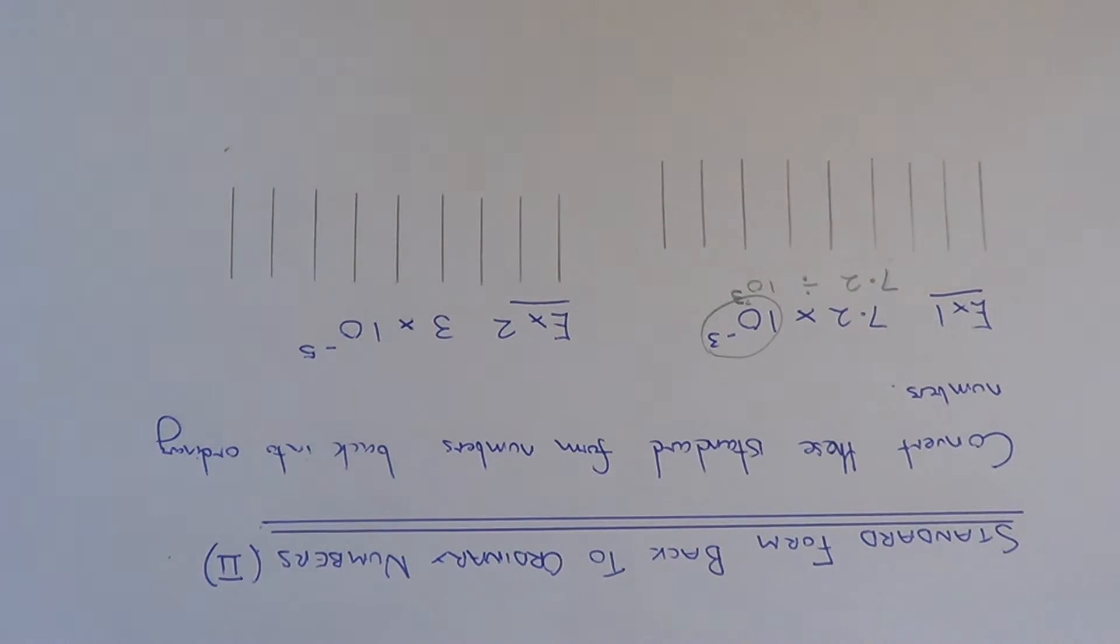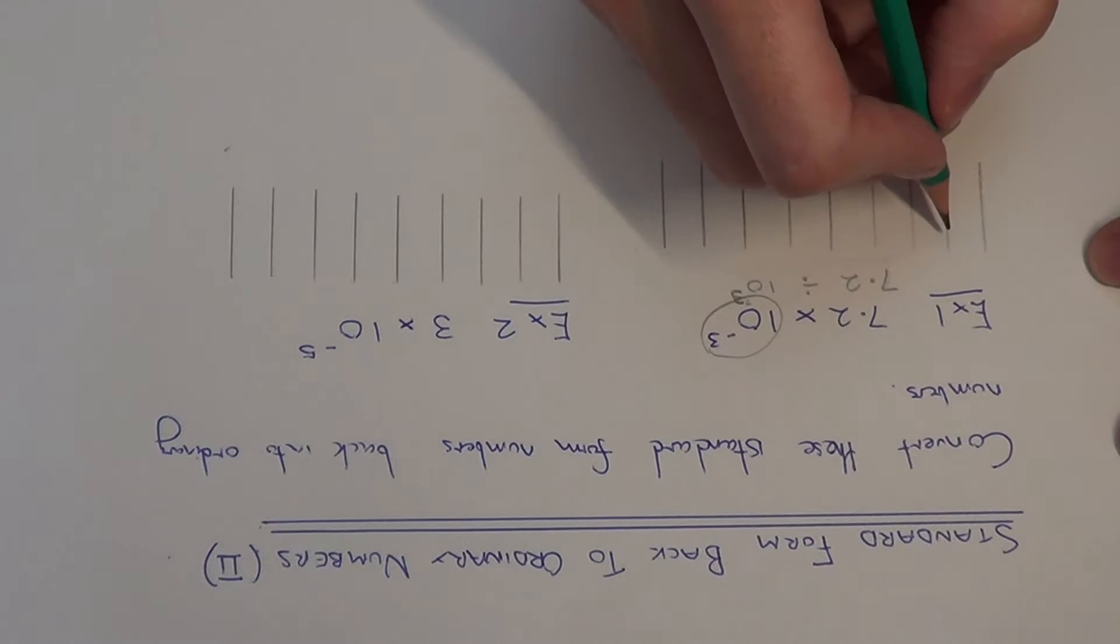And if you think about when you divide by 10, 100 and 1,000 you move the digits to the right. So if you put the 7.2 onto these columns here